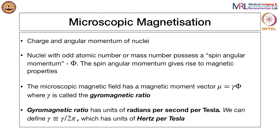So, Microscopic Magnetization. Every nucleus has both charge and so-called spin angular momentum. The spin angular momentum is actually an intrinsic property of the nucleus. It has no counterpart in classical physics in the sense that the idea of spin originates from quantum mechanics, but we will not go into the details. In addition to charge, the nuclei also have this spin property, which gives rise to the magnetism.